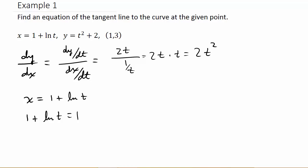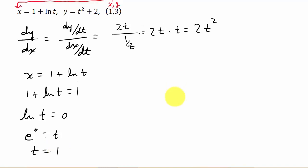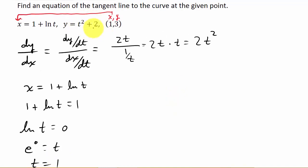Well, that tells us that 1 plus the natural log of t is equal to 1. Where did we get that? Well, you see our point here? This is the point (x, y), and x is 1. So we plug this 1 in here for x, and now we need to solve. So we get natural log t is equal to 0, and then we convert this to exponential form. That's e to the 0 equals t. So we get t equals 1.